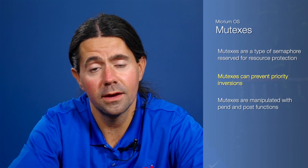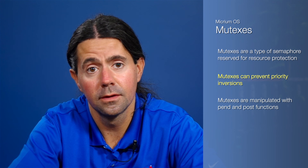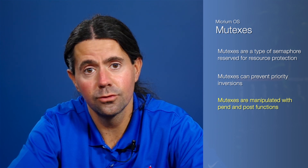To sum up what we covered today: mutexes are a type of semaphore reserved exclusively for resource protection. One of the major advantages of mutexes over semaphores is that mutexes can prevent priority inversions. Like semaphores, mutexes are manipulated with pend and post functions — a task can pend to gain access to a resource protected by a mutex, and it can post to give up the resource. In our next episode, we'll continue to discuss the kernel services that Micrium OS provides for task interaction. We'll look at intertask communication and message queues. See you next time!